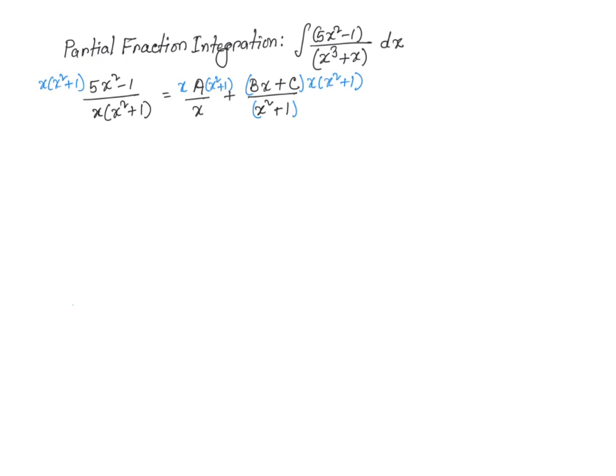Now, I can go ahead and simplify it. These two and these two are going to cancel out. That's going to give me 5x squared minus 1 is equal to x and x is going to cancel out. Then if I use distributive property, it's going to be Ax squared. A times x squared is x squared plus A times 1 is A. And then this and this is going to cancel. Then if I multiply Bx plus C by x, I get Bx squared plus Cx.